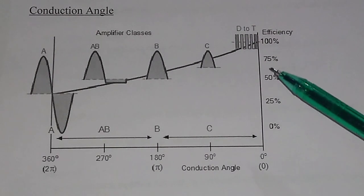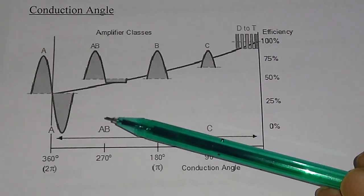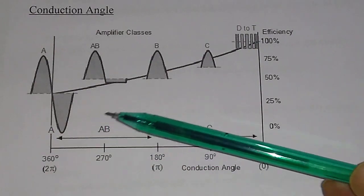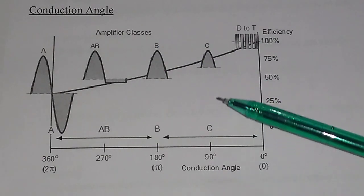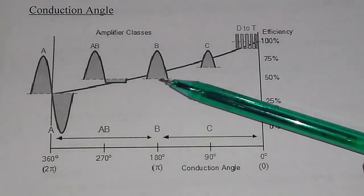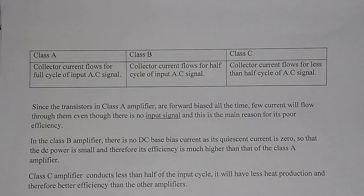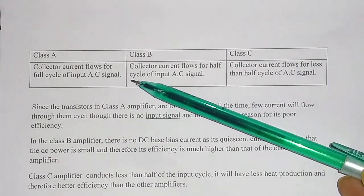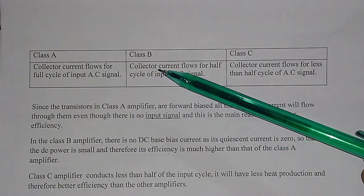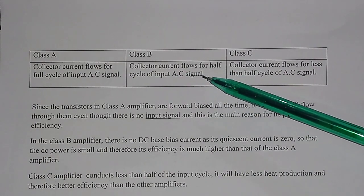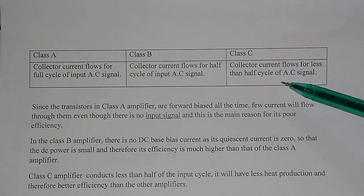Comparing the efficiency of class A, class B, and class C amplifiers: the efficiency of class A is the least, class B efficiency is more than class A, and the efficiency of class C is the highest — more than both class B and class A. In class A, collector current flows for the full cycle; in class B, for half cycle; and in class C, for less than half cycle of the input AC signal.